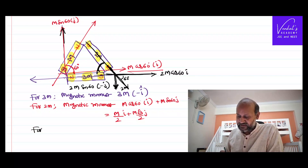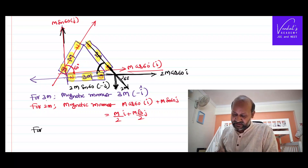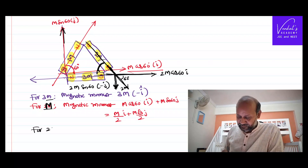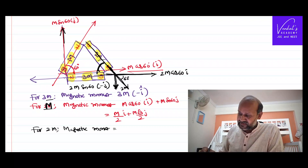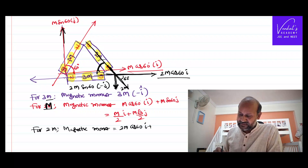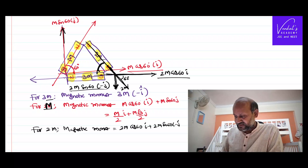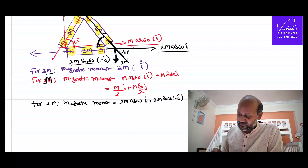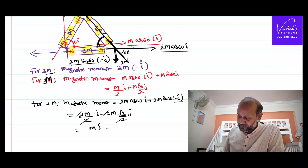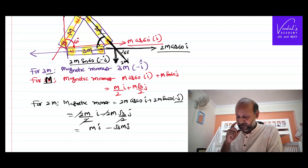So for the 2m magnet, the magnetic moment in terms of components is: 2m cos60 î plus 2m sin60 (minus ĵ). Simplifying, 2m cos60 = 2m × 1/2 = m î, and 2m sin60 = 2m × √3/2 = √3m, so it becomes m î minus √3m ĵ. That's the value for the third magnet.